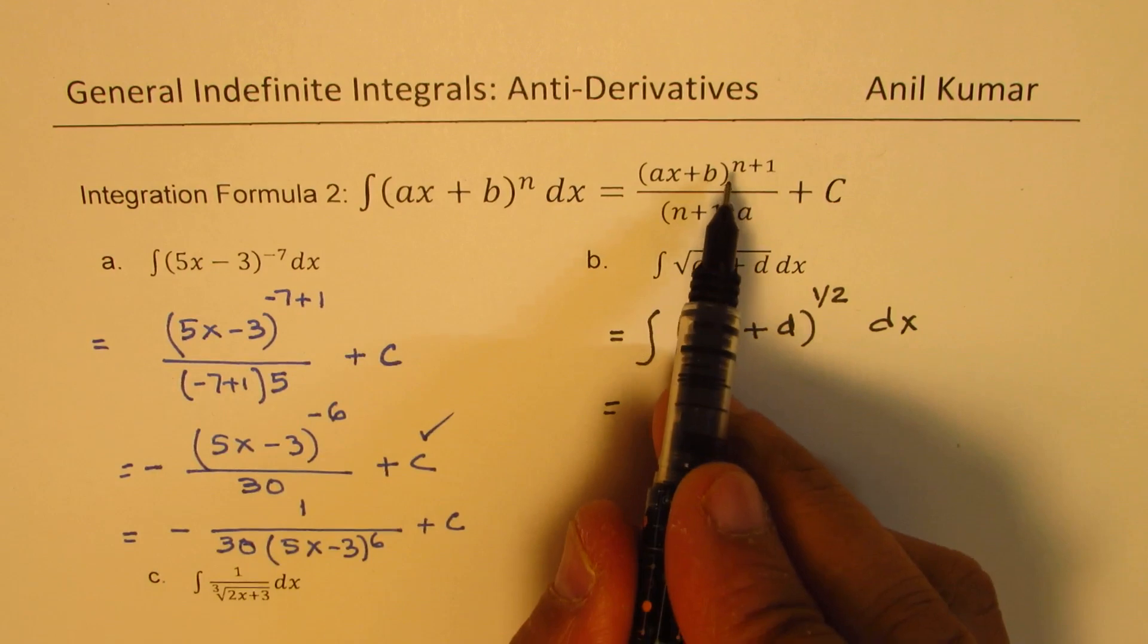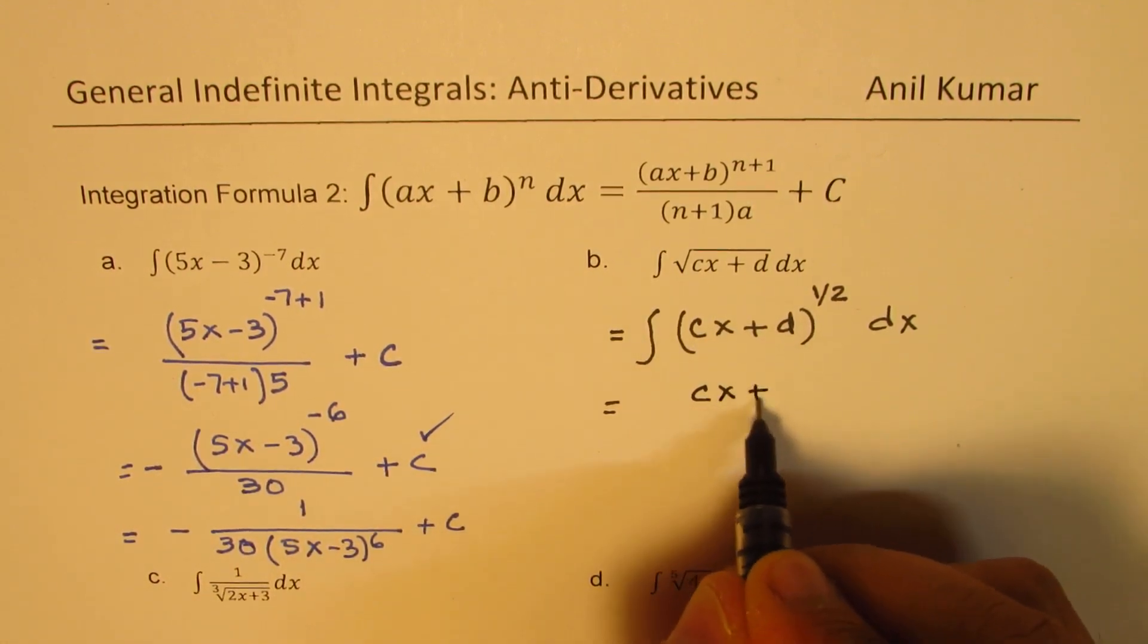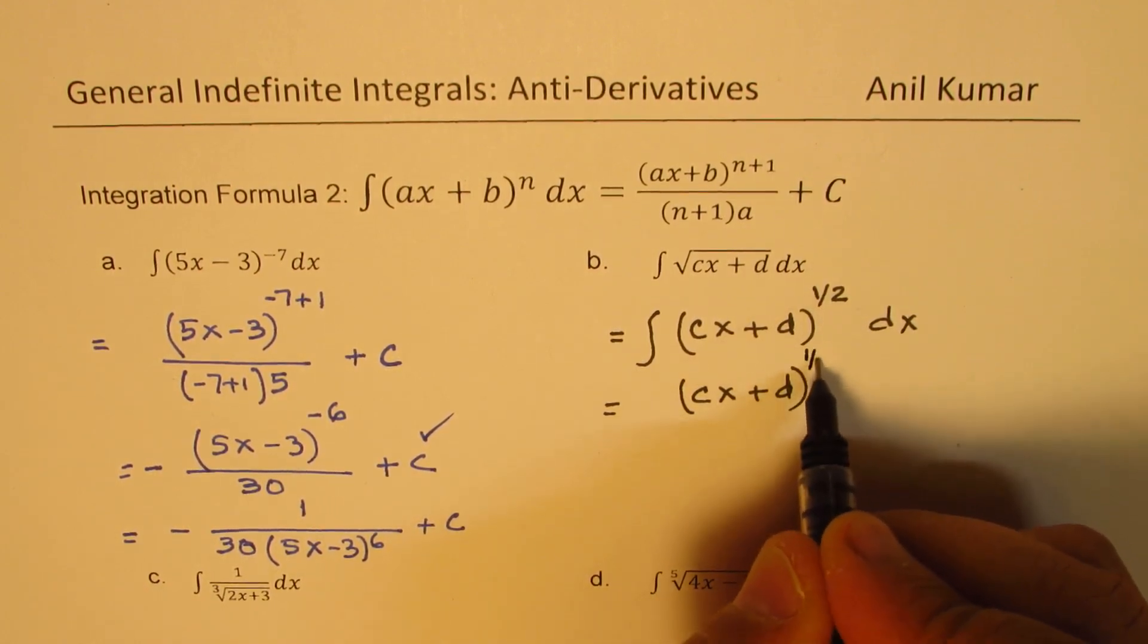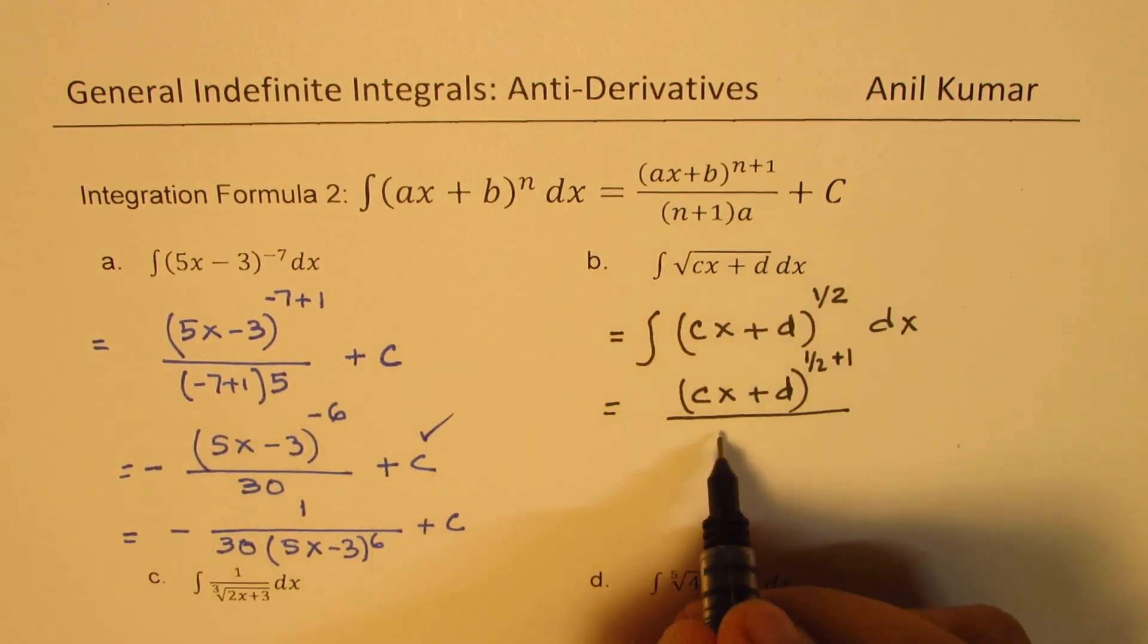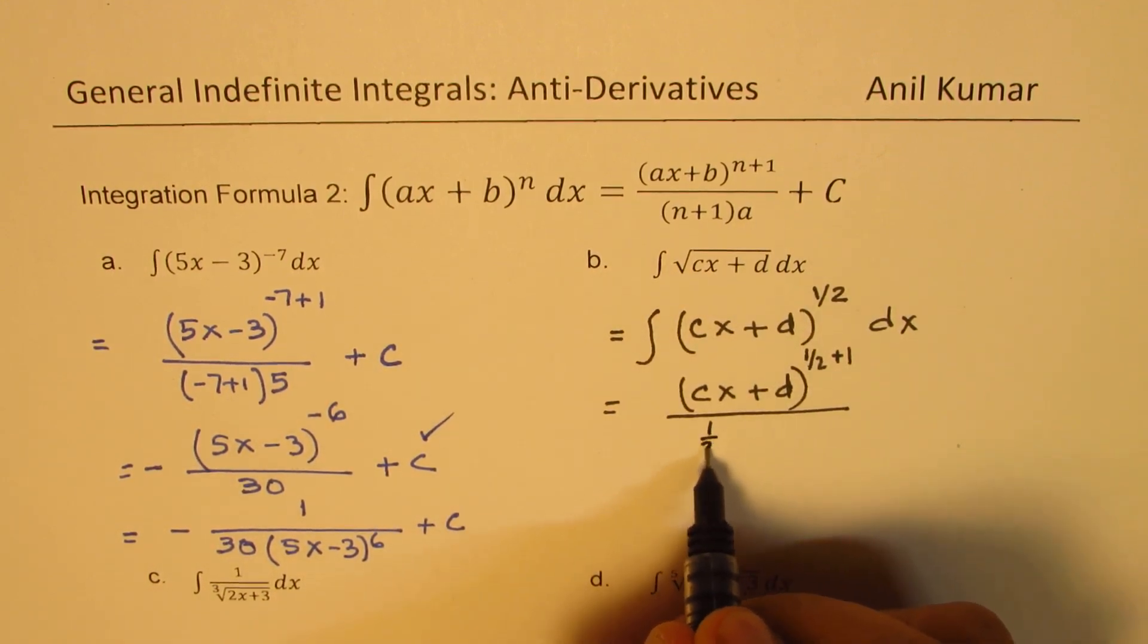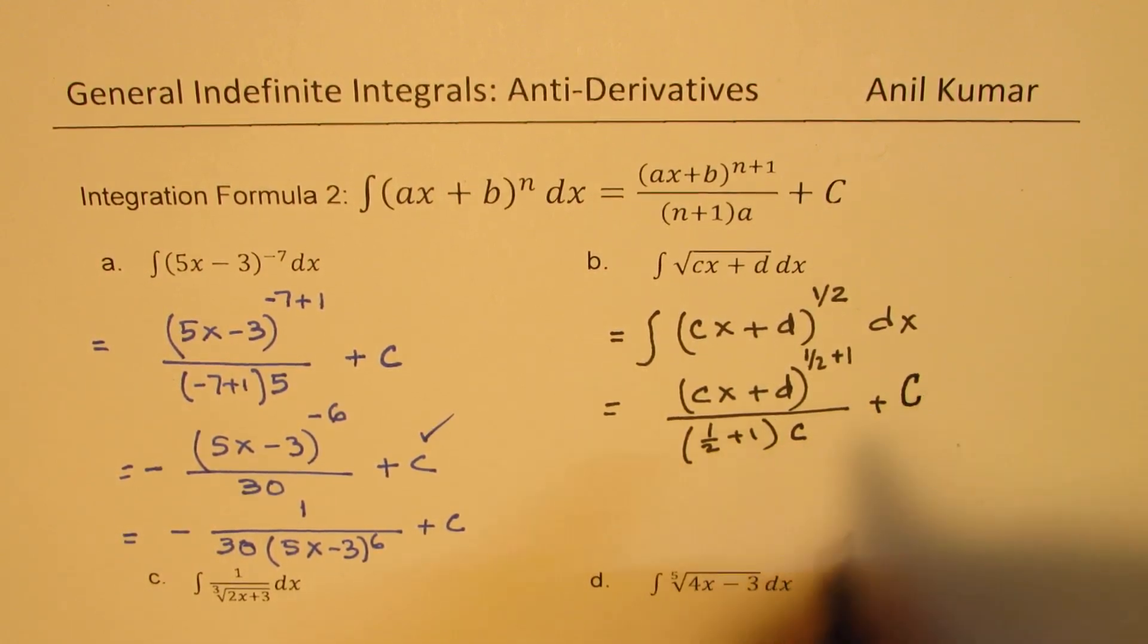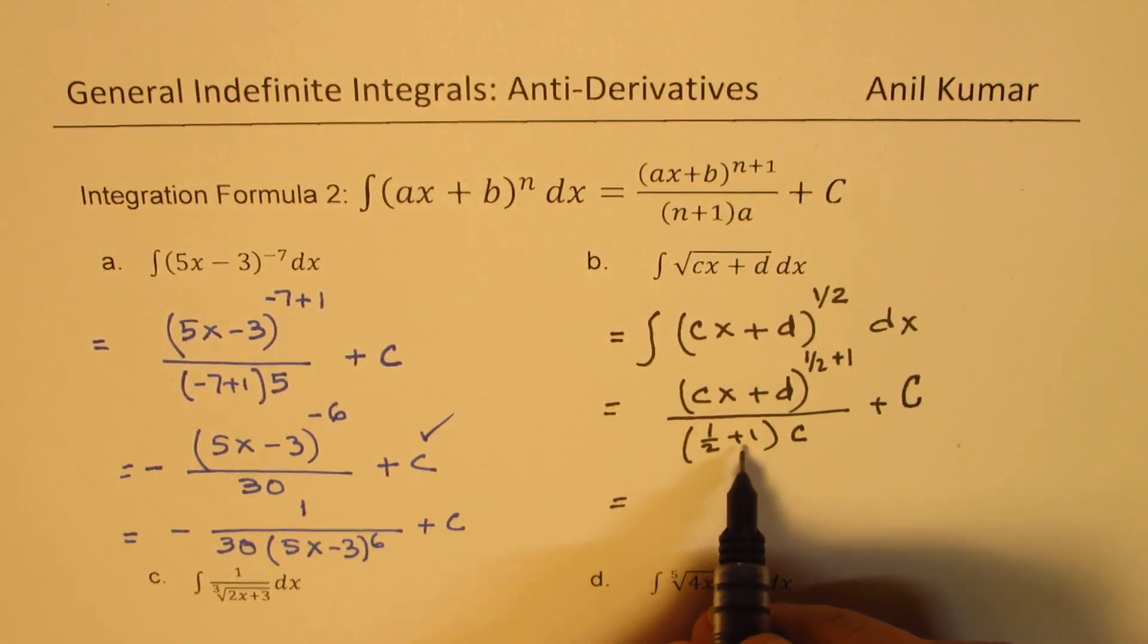Now, applying the formula in the numerator, we get cx plus d, and to the power of half means half plus 1. Half plus 1 divided by half plus 1 times the constant c plus capital C.